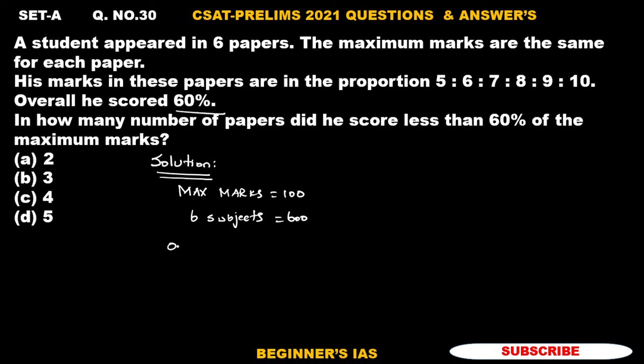Now here it is given that he secured 60% overall. So let us analyze the overall marks scored by that person. Therefore the overall marks is 60% of 600. So what do you mean by 60%? 60 divided by 100 into 600. Cancel these zeros. 6 into 60 is 360 marks. So totally he has secured 360 marks out of 600.